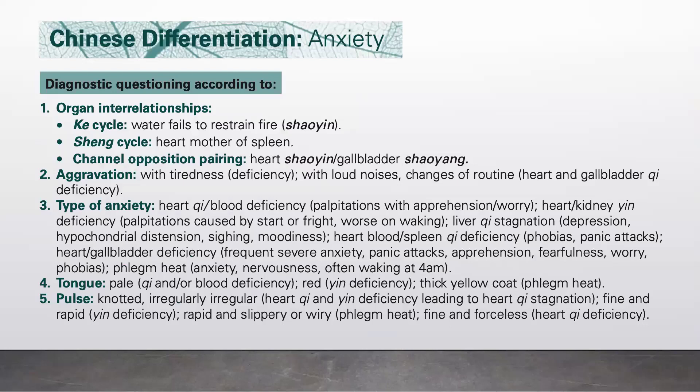Now let's look into the pulse. If it's knotted and irregularly irregular, it is heart qi and Yin deficiency leading to heart qi stagnation. If the pulse is fine and rapid, it indicates Yin deficiency. If it is rapid and slippery or wiry, it indicates phlegm heat. And if it's fine and forceless, it indicates heart qi deficiency.